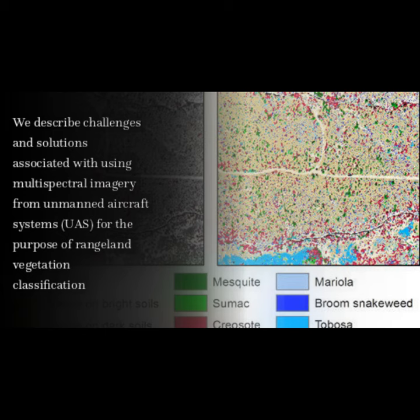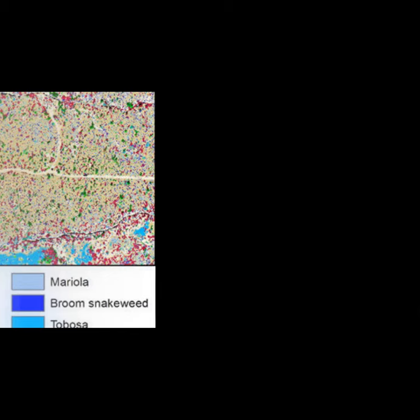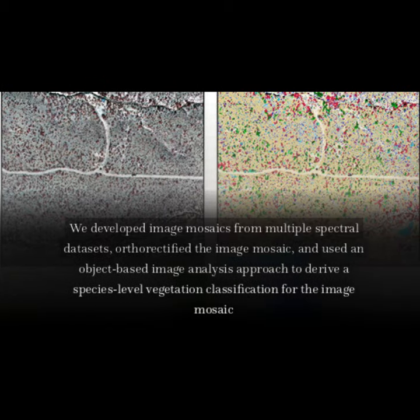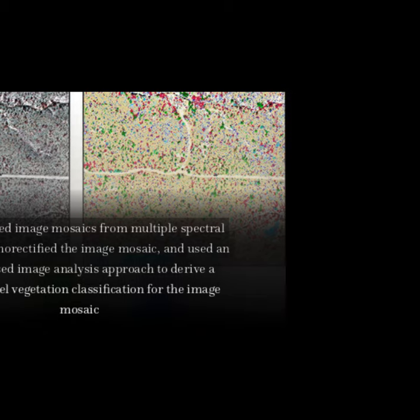We described challenges and solutions associated with using multispectral imagery from Unmanned Aircraft Systems (UAS) for the purpose of rangeland vegetation classification. We developed image mosaics from multiple spectral datasets, orthorectified the image mosaic, and used an object-based image analysis approach to derive a species-level vegetation classification for the image mosaic.